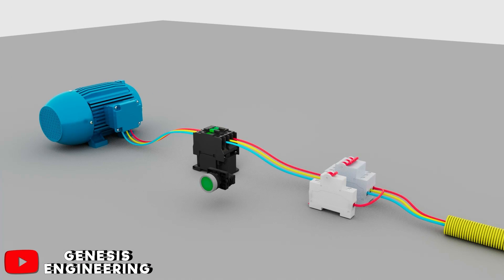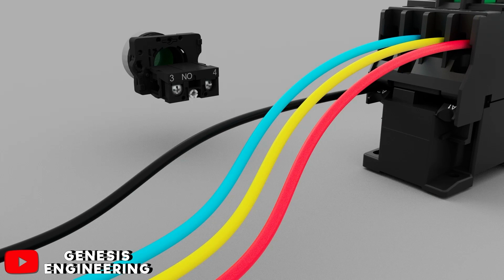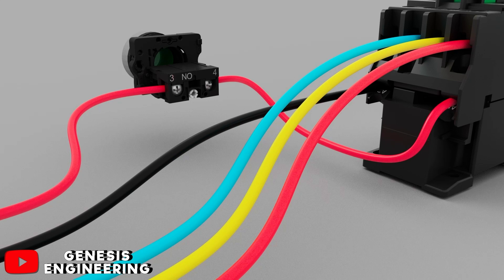We connect the direct neutral to A2 of the contactor coil, then we connect the other phase to terminal 3 of the green button and output another phase to terminal 4 of the button to A1 of the contactor.